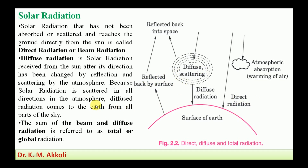There are two types of radiation reaching the earth's surface in the form of solar energy: beam radiation and diffuse radiation. The sum of the beam and diffuse radiation is referred to as the total or global radiation. We have now discussed how radiation energy reaches the earth's surface, what forms it takes, and what happens to it as it passes through the atmosphere.